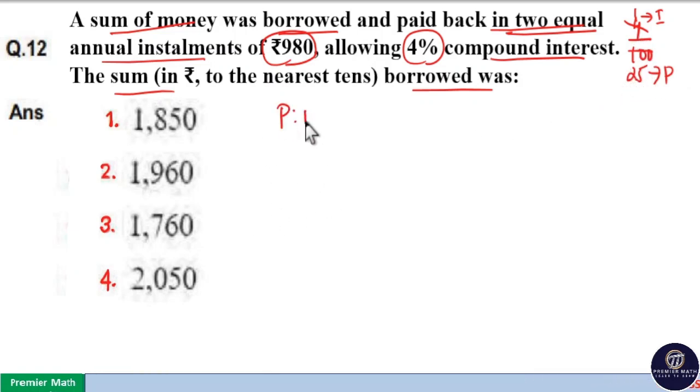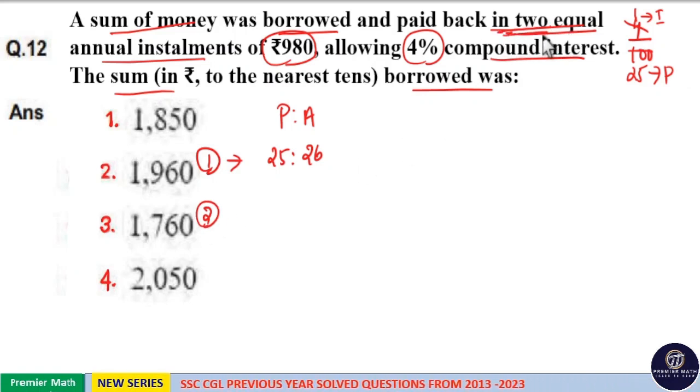Here take the principal and amount ratio. In first year principal is equal to 25 parts and amount is equal to 25 plus 1, 26 part. Now in second year there are two years because amount paid back in two equal annual installments means total two years. So in second year principal is 25 square and amount is 26 square.